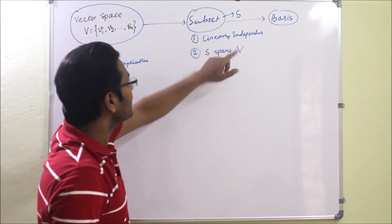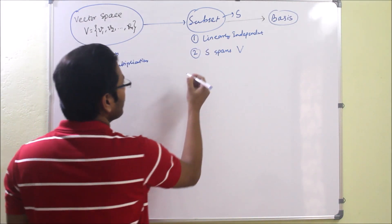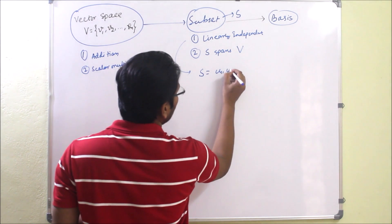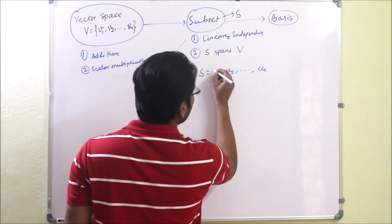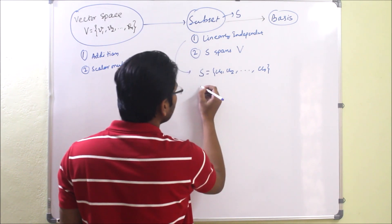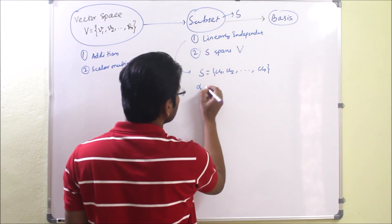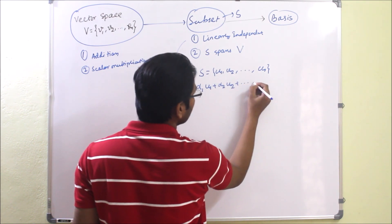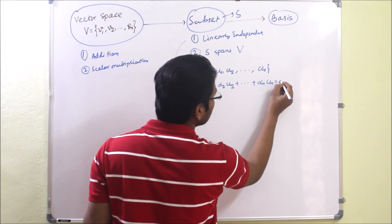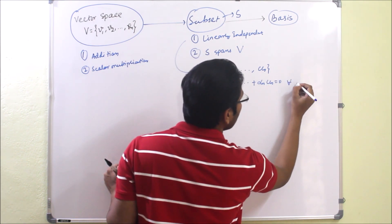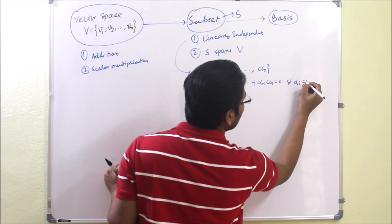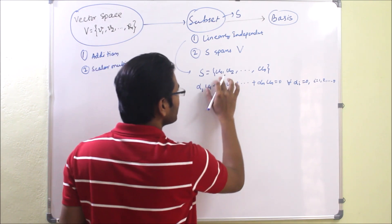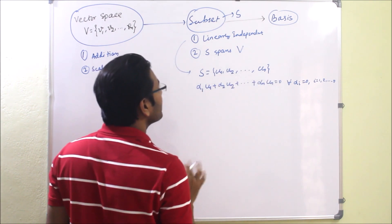Now we will see what is linearly independent. If S contains vectors U1, U2, ..., Un, and if we write the linear combination α1·U1 + α2·U2 + ... + αn·Un = 0 only when all αi = 0 for i = 1 to n, then we call those vectors U1, U2, ..., Un linearly independent.